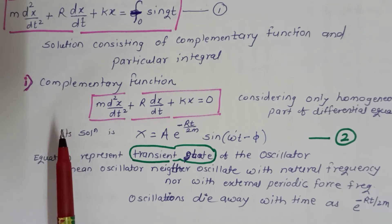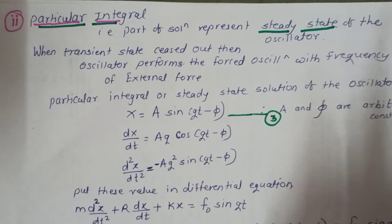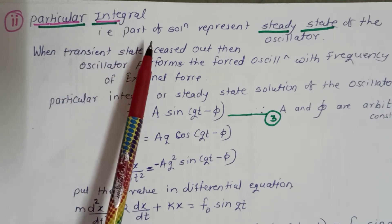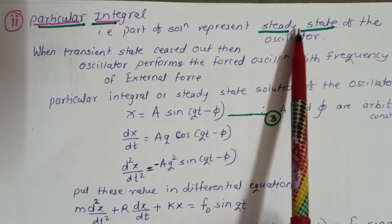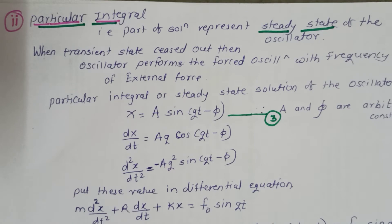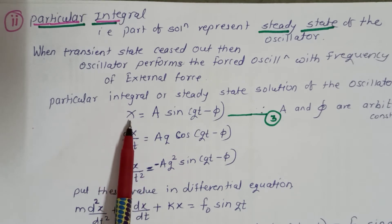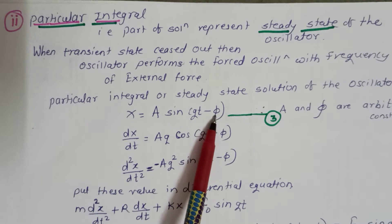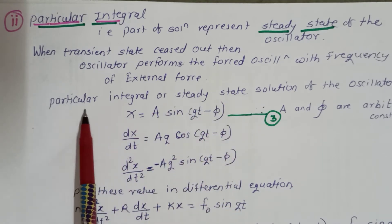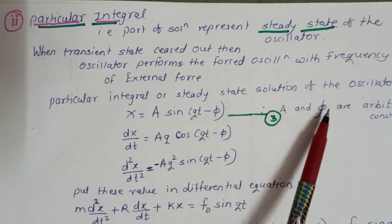The particular integral is the part of the solution that represents the steady state of the oscillator. The complementary function solution is neither oscillatory with natural frequency nor with external periodic force frequency. In the particular integral, we get the steady state solution. Consider the solution x = A·sin(Qt − φ), where A and φ are arbitrary constants.